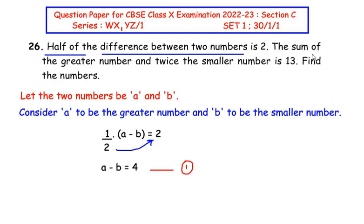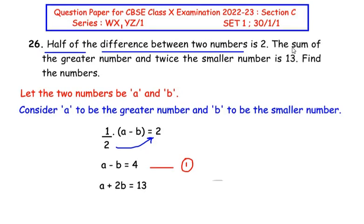Let us look at the second statement. The sum of the greater number and twice the smaller number is 13. So the sum of the greater number, a, and twice the smaller number, 2 times b, is equal to 13. This forms equation 2.